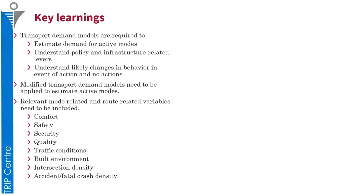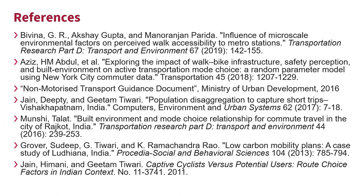When modeling active mobility demand, we need to modify conventional transportation demand approaches. Such modifications include using small size zones, using appropriate and relevant variables to consider the impedance imposed on active mode users, and digitizing and considering all road links. The relevant variables may include measures of comfort level, safety, security, quality, traffic conditions, built environment, intersection density, and accident or fatal crash densities.